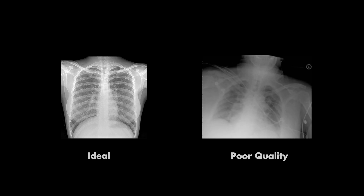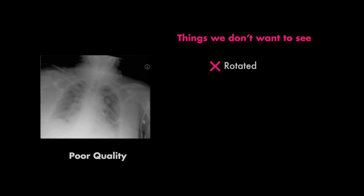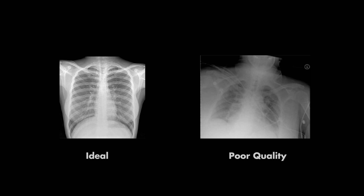Here's an ideal x-ray, and here's an x-ray of poor quality. These are obviously not the same patients, but you can tell that the one to the right is a little more difficult to read. The patient is rotated, there are cables in the field, there's poor inspiration, and so on. So before trying to interpret the film, first determine if the x-ray is of good enough quality. The last thing you want to do is make a conclusion based on bad data.